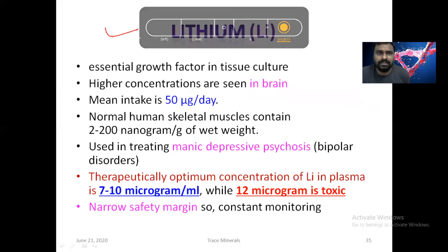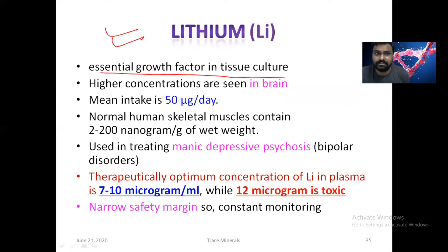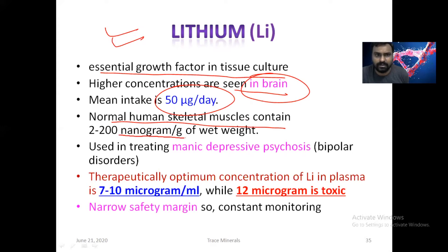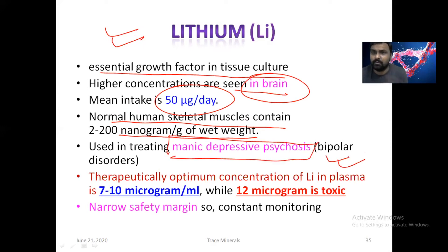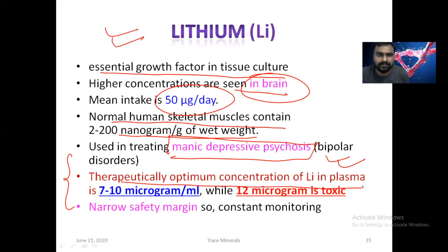Now coming to lithium. It is an essential growth factor in tissue culture. Its highest concentration is seen in the brain. Mean intake is around 50 micrograms per day. Normal human skeletal muscle content is 200 nanograms per gram of body weight. Lithium is used in the treatment of manic depressive psychosis and bipolar disorder. It has a very narrow therapeutic range — therapeutically optimal concentration is 7 to 10 micrograms, while 12 micrograms is toxic, so therapeutic drug monitoring is always required.